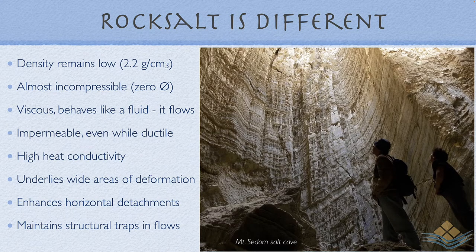Halite has a range of properties that make it unique in the diagenetic realm. It is almost incompressible. It has zero porosity from a few hundred meters of burial, so its density remains constant but relatively low throughout the diagenetic realm at around 2.2 grams per cc. Salt behaves more like a fluid than a solid mass at geological time scales. It maintains its seal capacity, continues to be impermeable even while flowing, and has relatively high heat conductivity, meaning it acts as a heat source for the local maturation of source rocks.